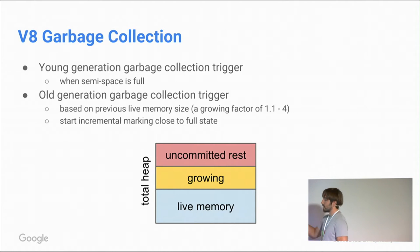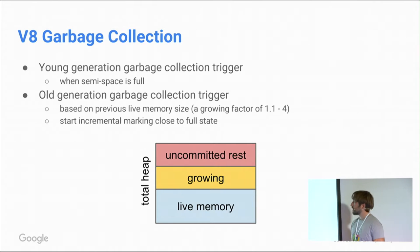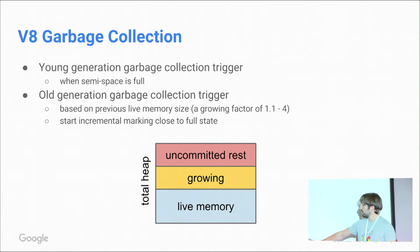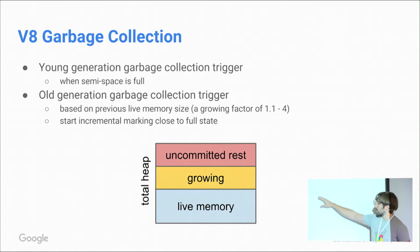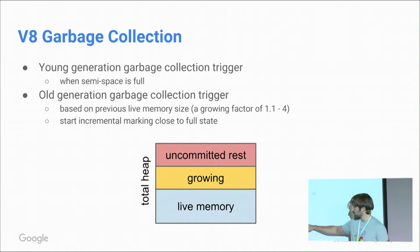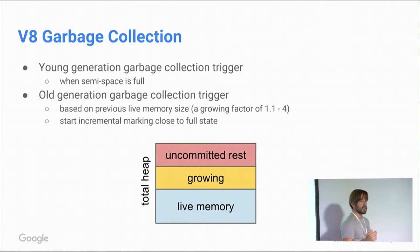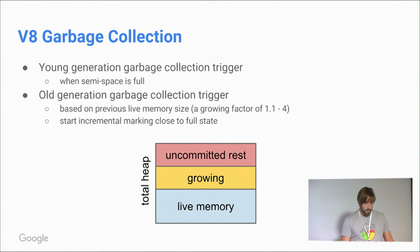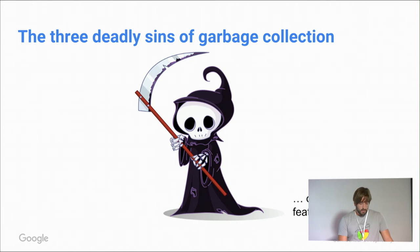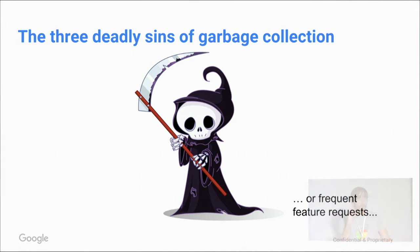At the end of the finalization of an incremental marking cycle, we know what was live, and we multiply the live memory bytes by a given factor to calculate the growing factor. This gives us the space available until the next garbage collection triggers. If there are any questions about that, please ask now or after the talk.